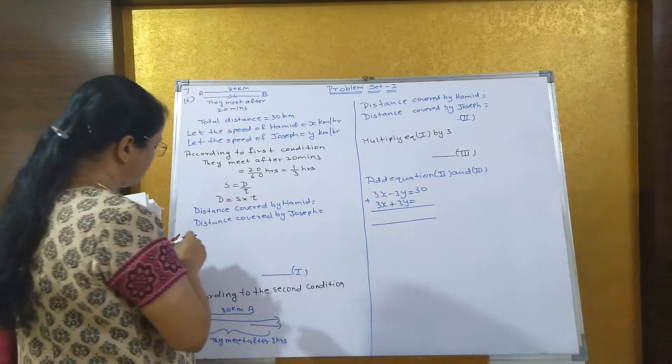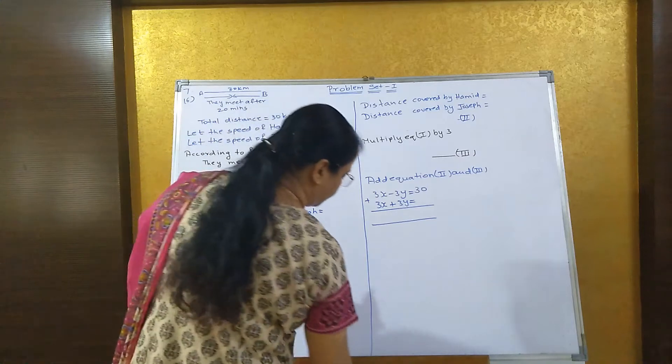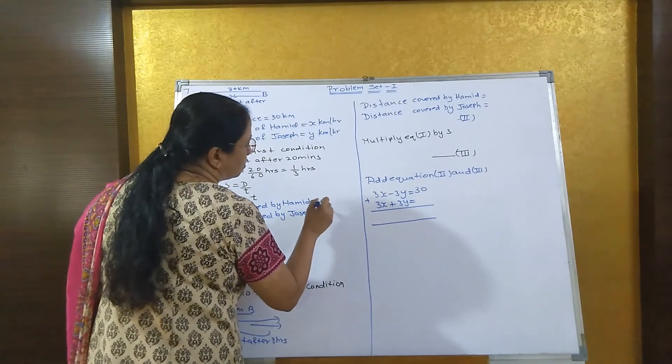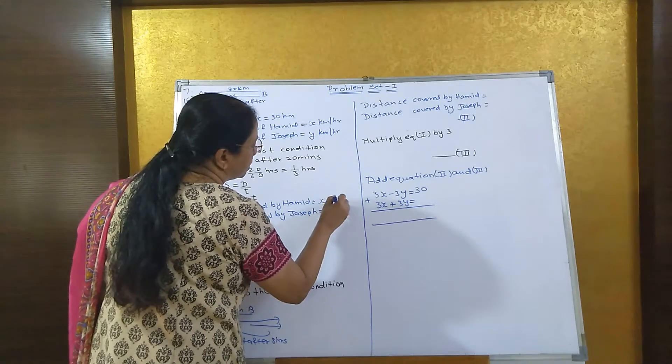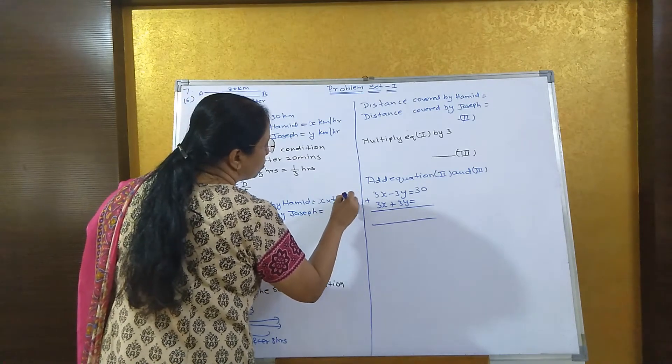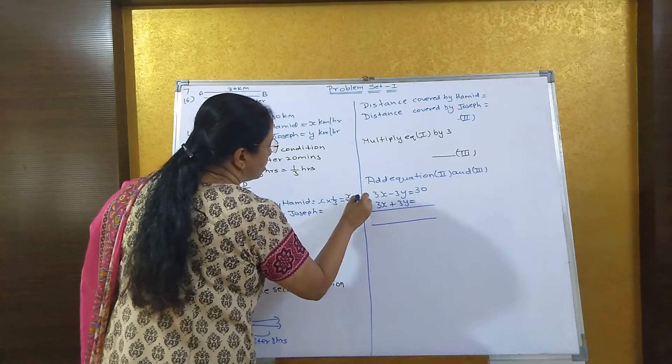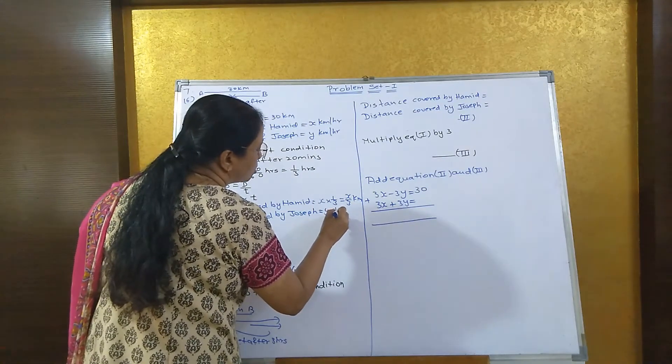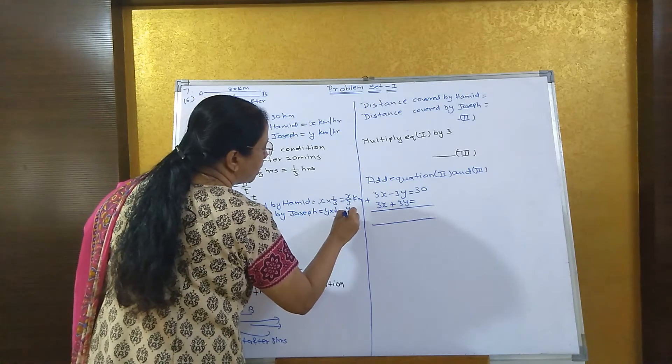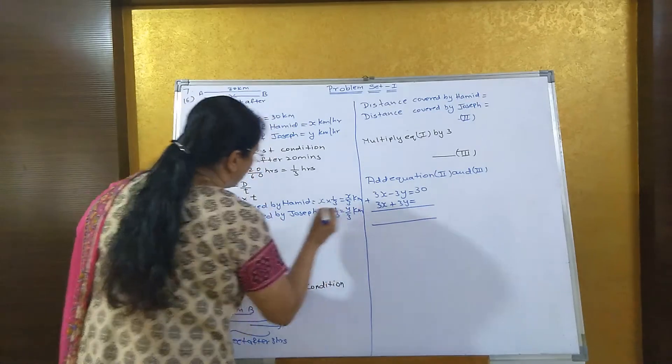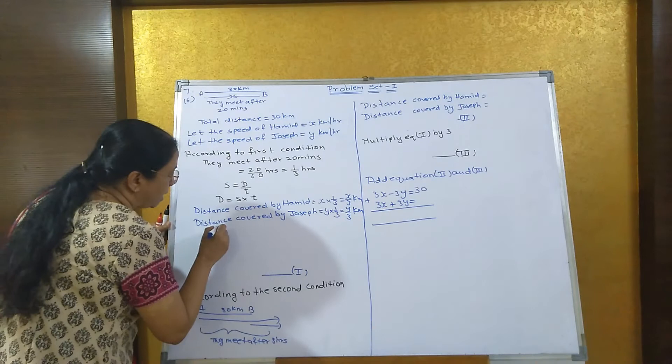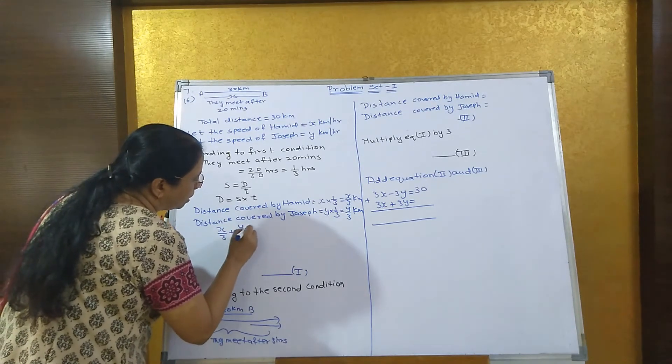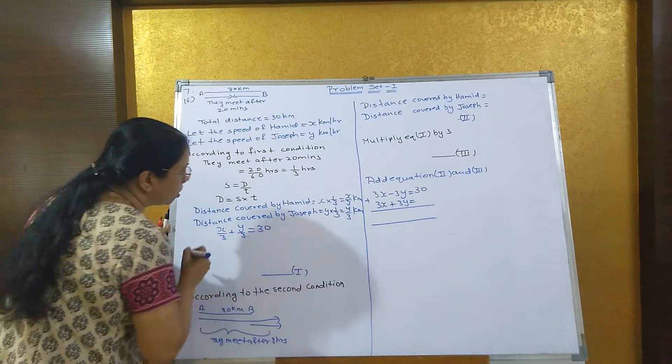Distance covered by Hamid: speed of Hamid is x, time taken is 1 upon 3, so that's x upon 3 km. Same way, speed of Joseph is y, time taken is 1 upon 3, that's y upon 3 km. According to the first condition, x upon 3 plus y upon 3, the total distance should equal 30.